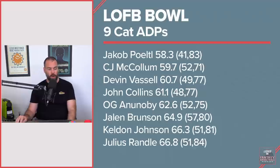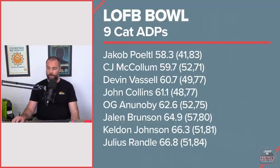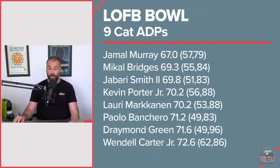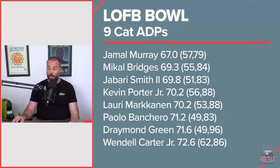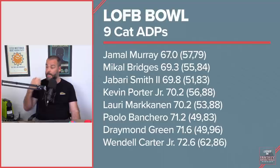Julius Randle had an average of 67 between 51 and 84 — someone taking Randle at 51 is bold. The headmaster went at 67 on average, up to 57th — you'll see him going top 60 a lot more — and fell as low as 79. Mikhail Bridges at 69.3 — highest of 55, lowest of 84. 55 is too high for me. Jabari Smith went as high as 51 — I do think he can be top 60 — with an average of 70 and as low as 83.